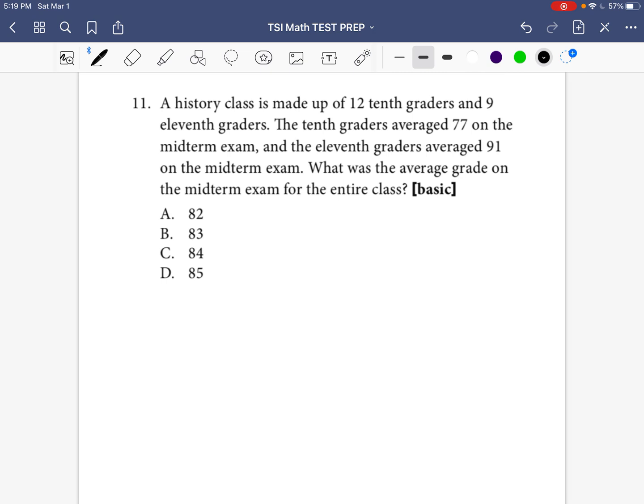Okay, so I just have to take notes because that's a lot of information, and I know they're trying to make me make a mistake by saying 12 tenth graders. So I'm just going to write this. There's tenth graders and there's eleventh graders. There are 12 tenth graders, I'm going to write 12, and then there's 9 eleventh graders. And then the tenth graders got 77, so 77% was their average, and the eleventh graders got 91%.